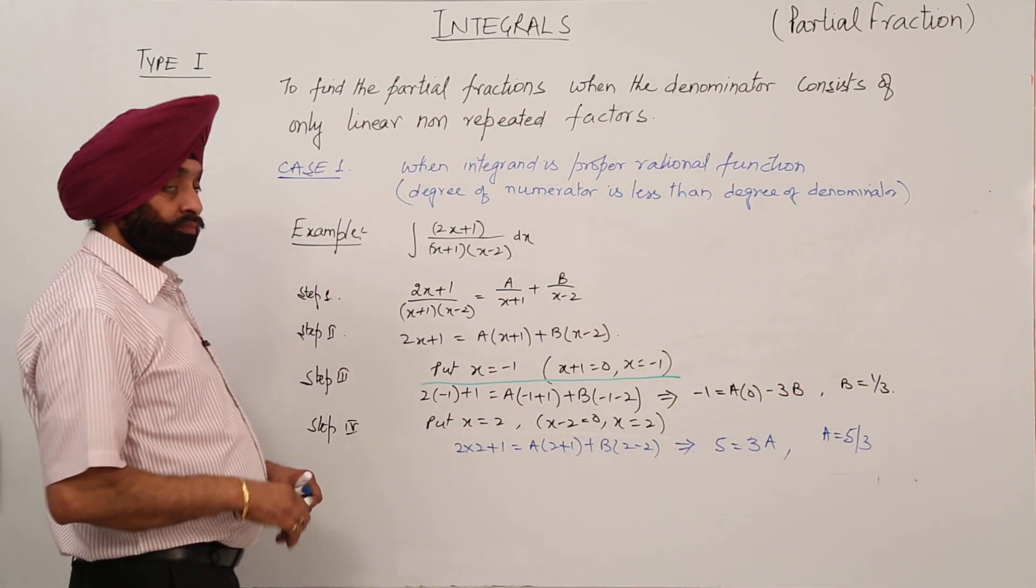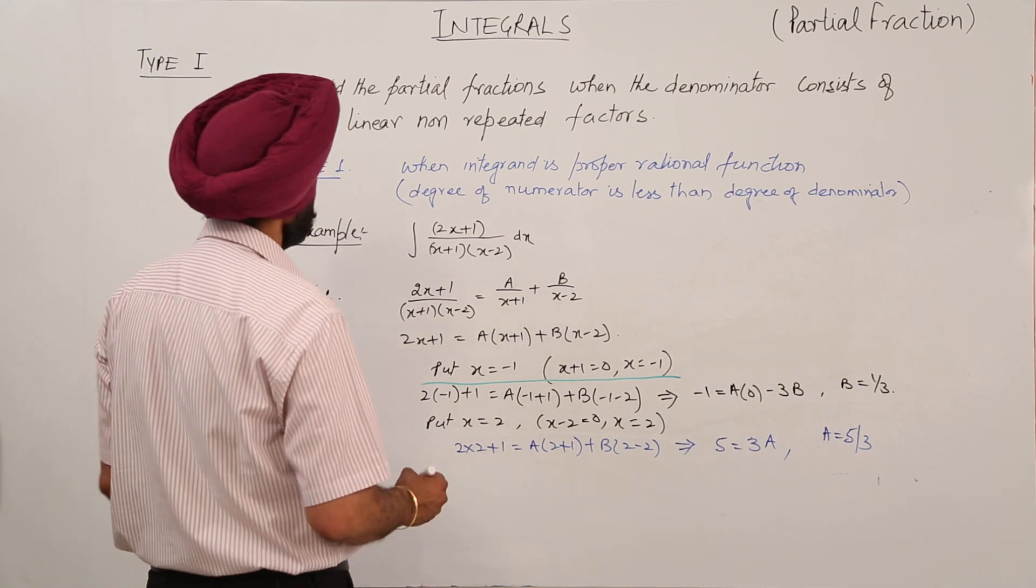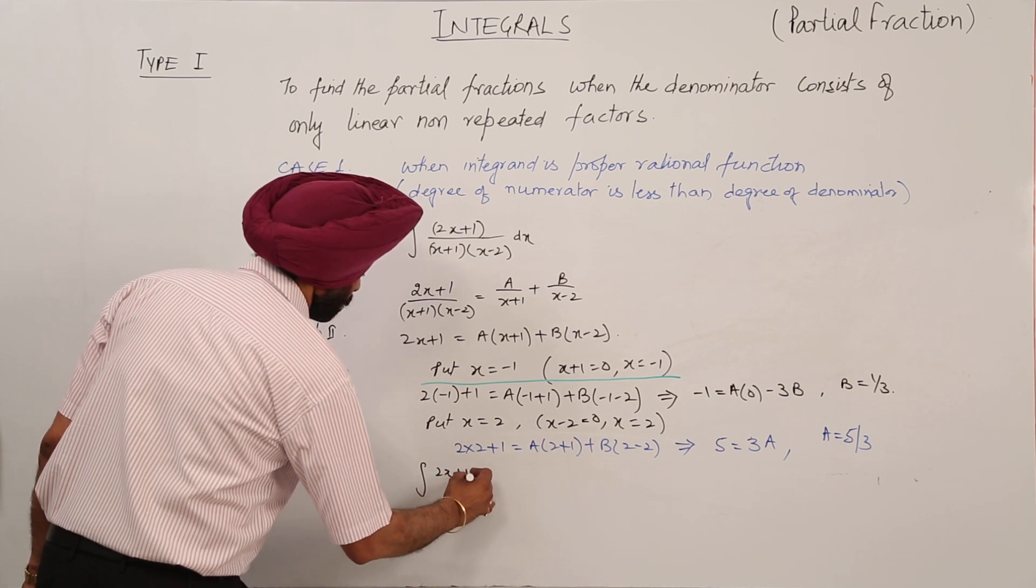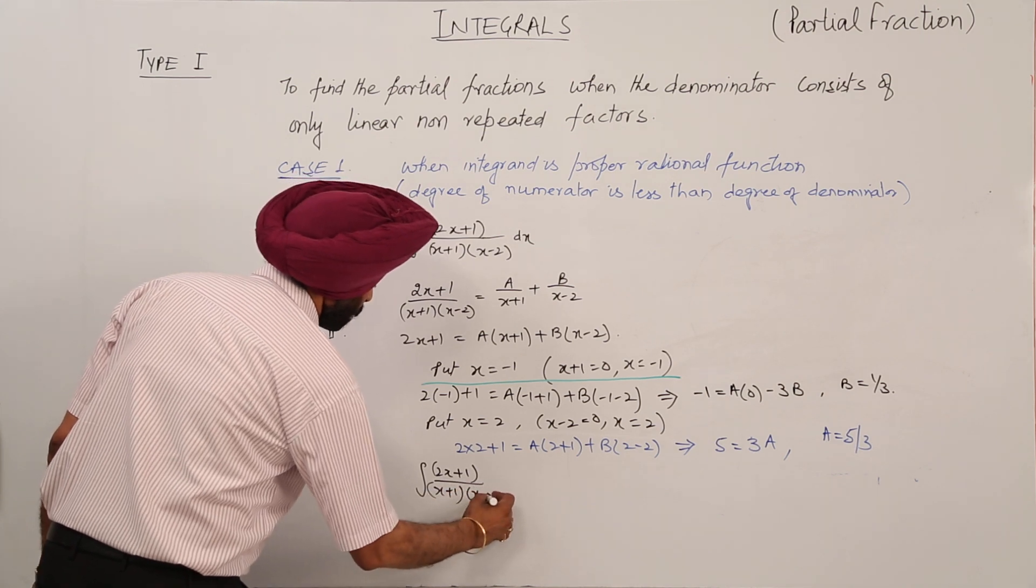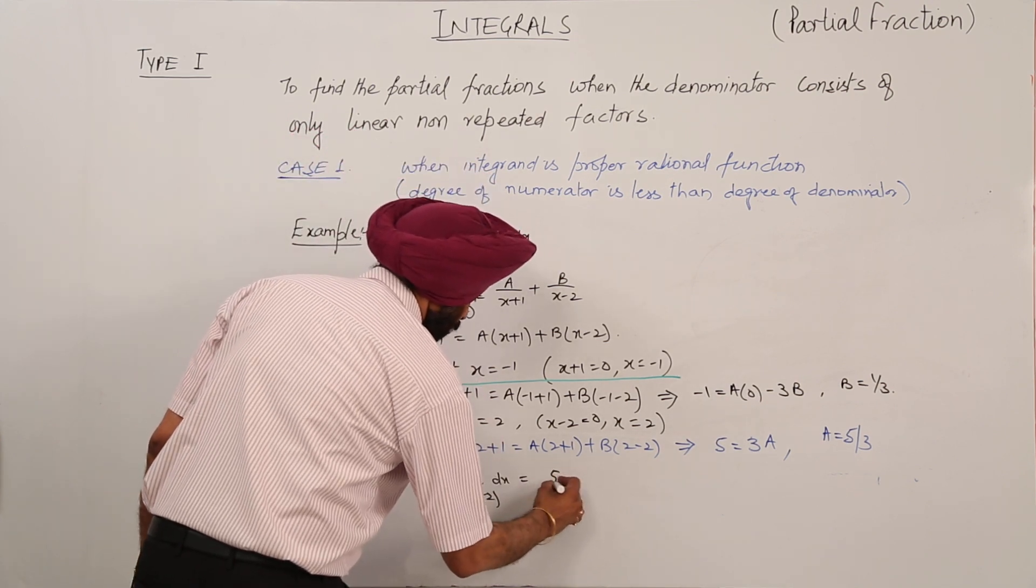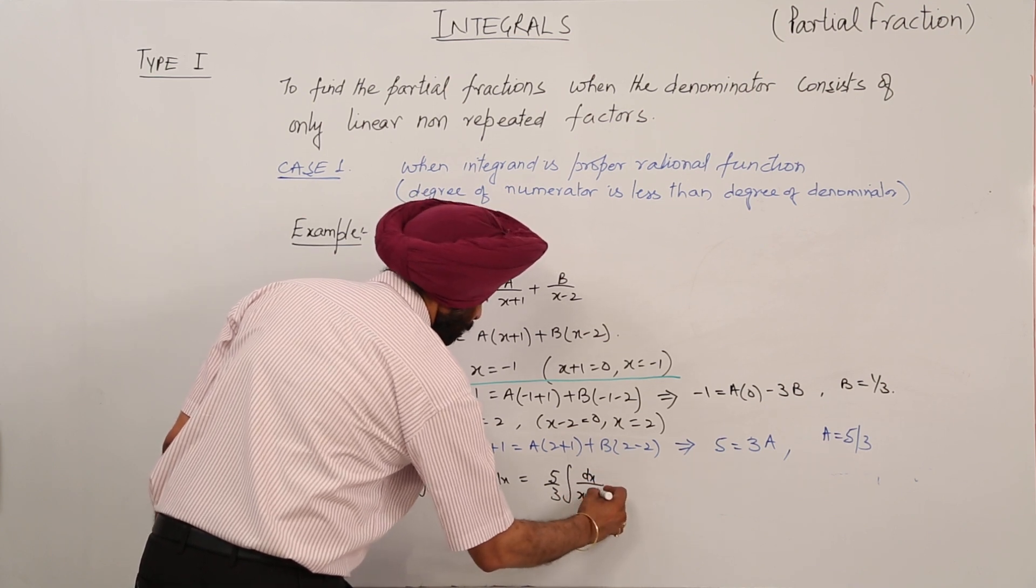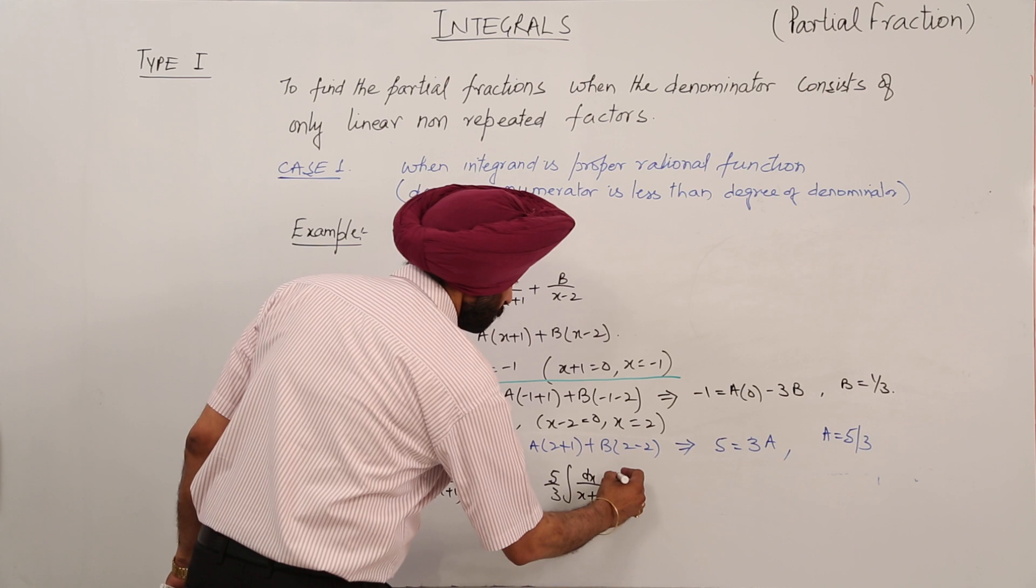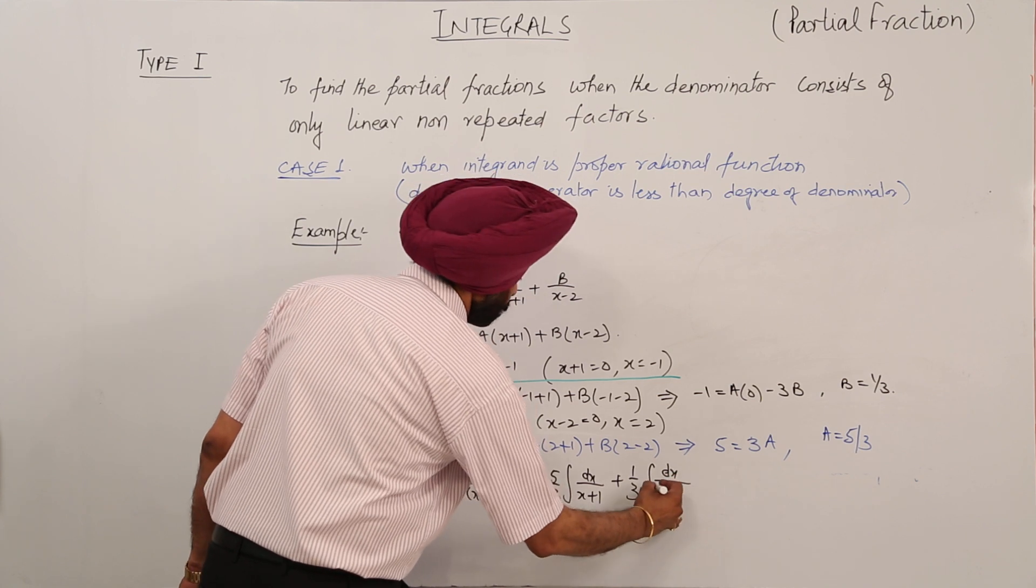Now the question converts to: integration of 2x plus 1 upon (x plus 1)(x minus 2) dx is equal to 5 by 3 integration of dx upon x plus 1 (putting the value of A here) plus B, that is 1 by 3, integration of dx upon x minus 2.